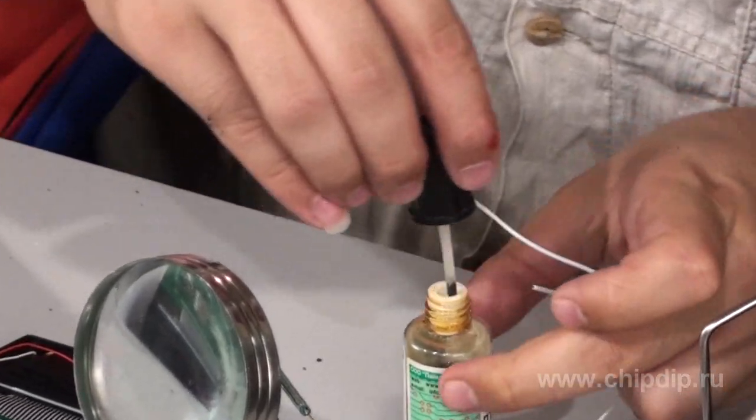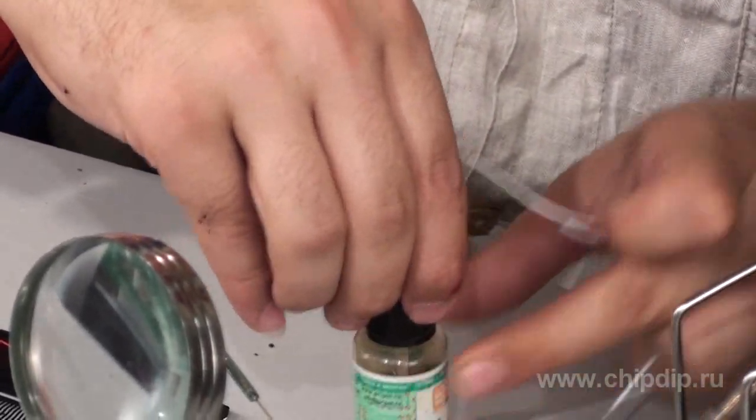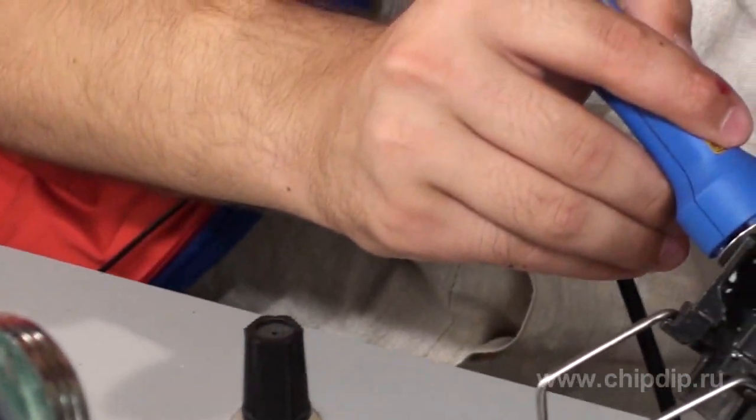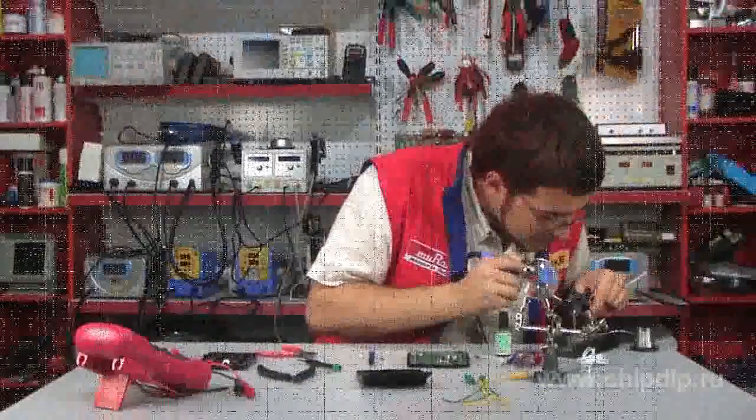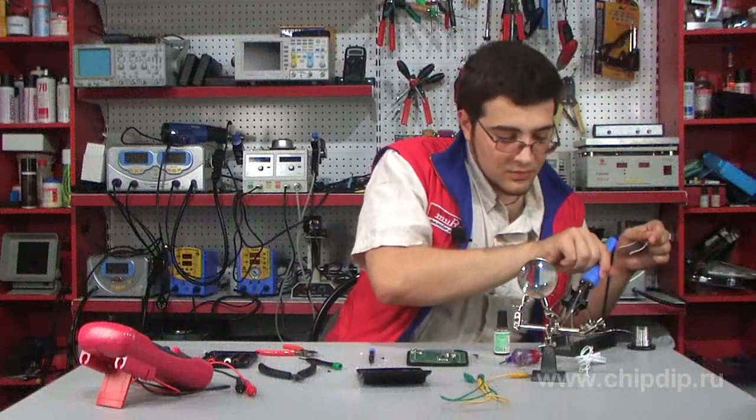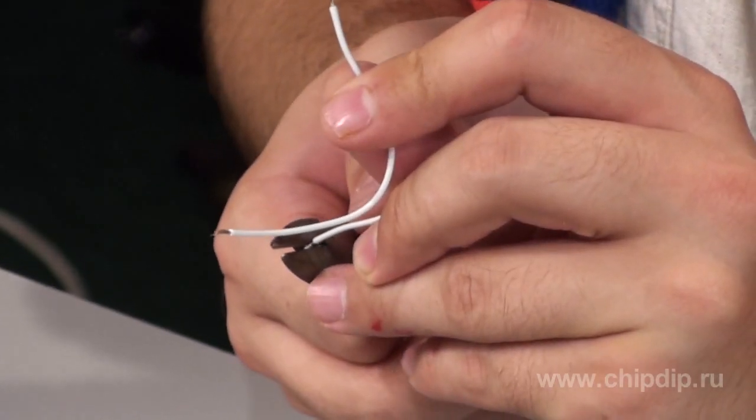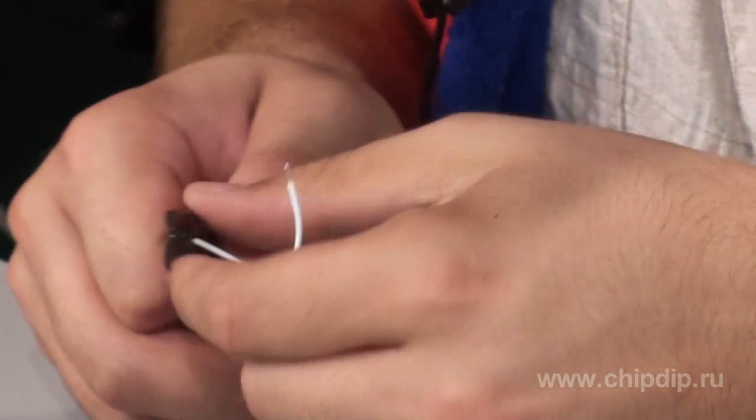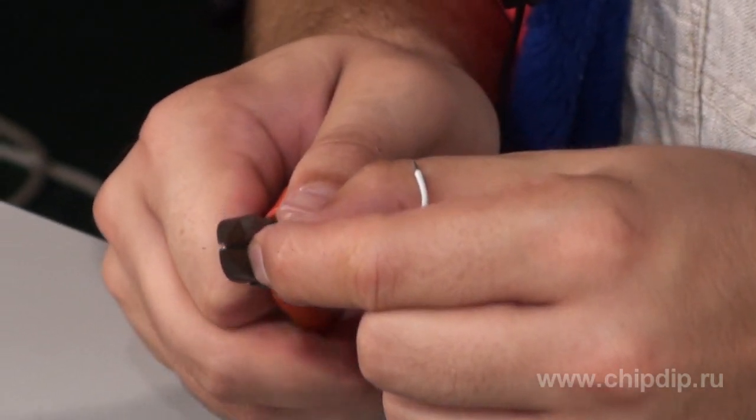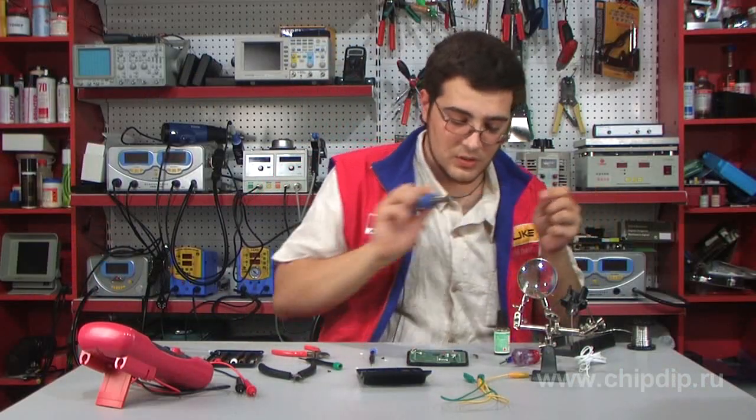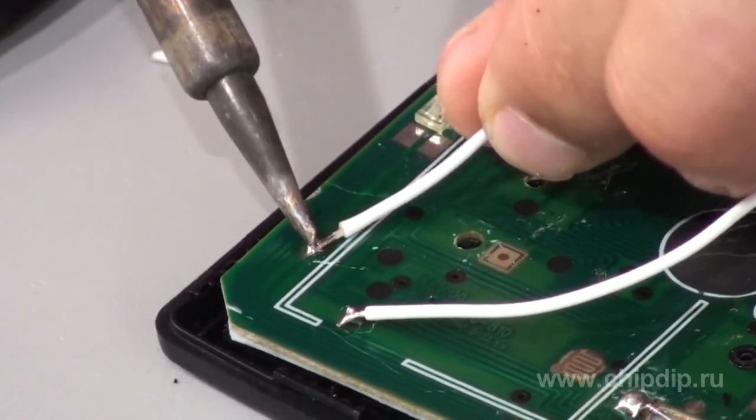We cover the wires with flux and then also tin them. Then we solder the wires.